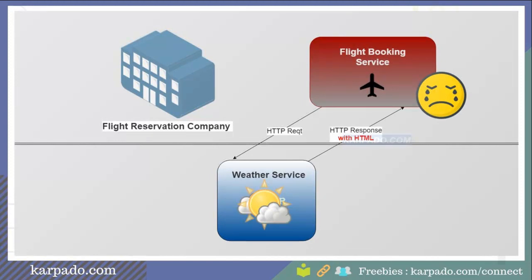But our application is designed in such a way that we won't be sending just data — we'll send data along with the HTML or presentation logic. This is clearly a problem. The flight booking service is expecting our service to send data, but we're sending data along with presentation logic. This is bad for two reasons. Number one, the flight booking service does not have knowledge on how to understand HTML, so they have to write additional code to chop off all the HTML tags and extract the data. Another problem is that even if they are able to do so, the presentation logic will not remain the same — it will keep changing. So when we make changes in our HTML code, it's also going to break their code and their application will not function as well.